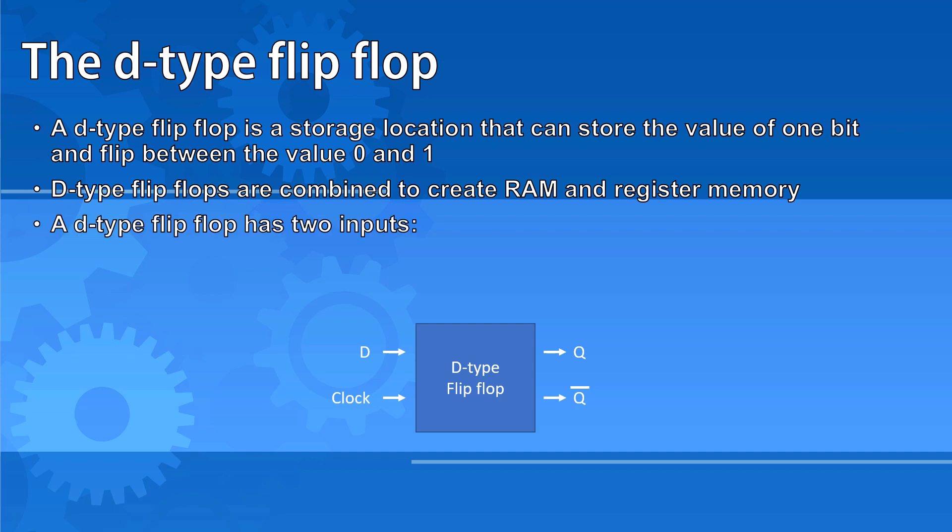A D-type flip-flop has two inputs: a control input labeled D and a clock signal.